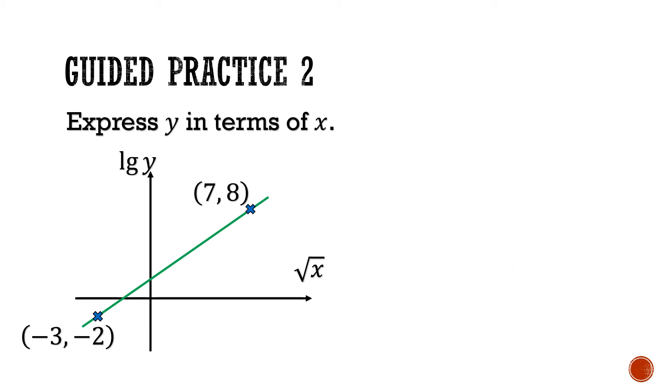Let's go through the answer. Step 1, we need to find the gradient. So we use the formula, m equals big Y2 minus big Y1 over big X2 minus big X1. Substituting the points in, did you get a gradient of 1?